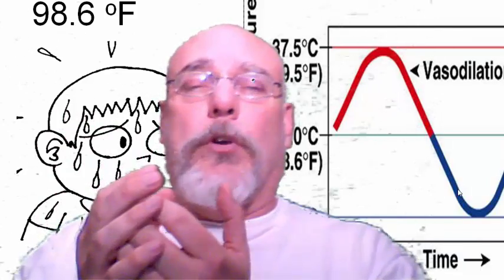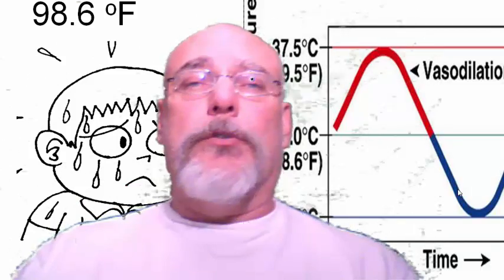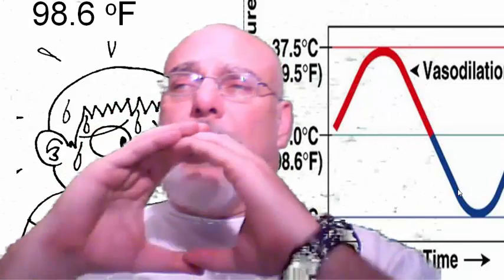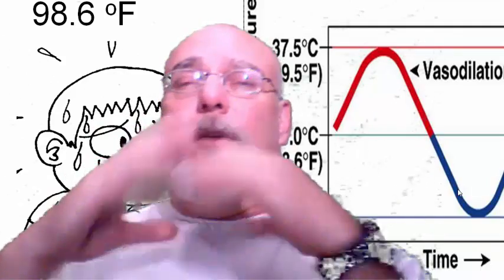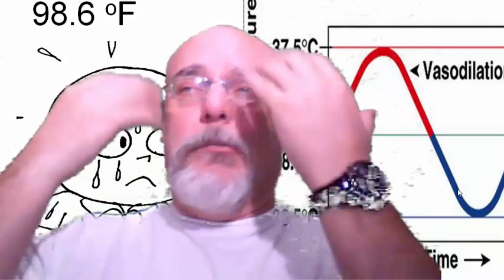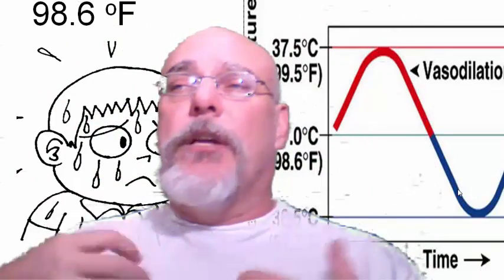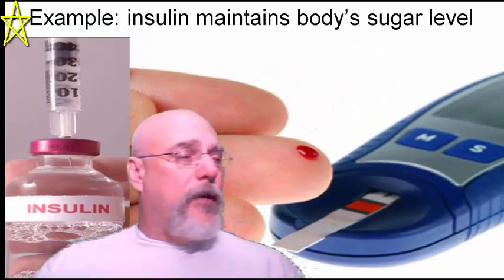That's why when it gets really cold your fingers start to get numb — blood flow is reduced to your extremities, which aren't as important for keeping you alive. That's why frostbite often happens on your toes and fingers first. Vasodilation is the opposite — it brings blood to your extremities to relieve heat from your body.